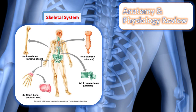When we talk about the skeletal system, we're talking about 206 bones and multiple joints in the human body. Bones can be classified in two ways: by shape and by structure. Long bones, such as the femur, are cylindrical with rounded ends and often bear weight — these are your weight-bearing bones.